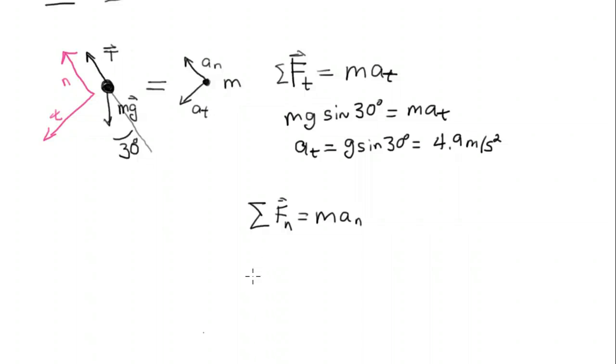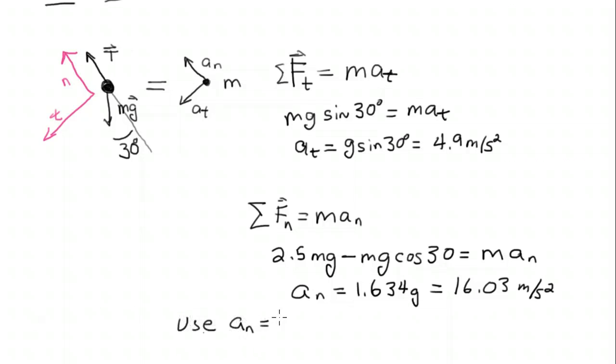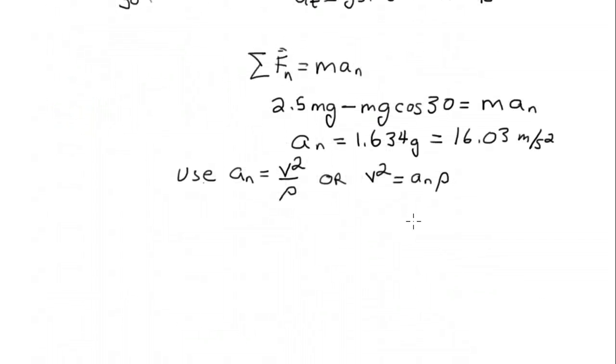Next we work on the normal forces. The sum of all the normal forces is going to be the mass times the normal acceleration. So first that, we have 2.5 times, that's the tension. 2.5 times the weight, that's the tension in the line. And that was given in the problem statement. And then we have minus mg cosine 30. That's the component along the direction there. We can solve for the normal acceleration. You can see it's 16.03 meters per second squared.